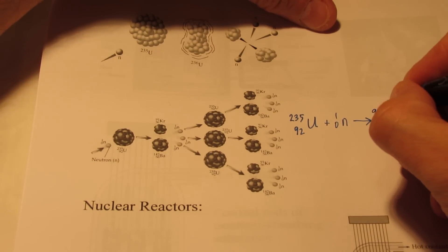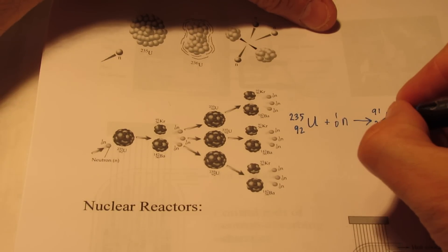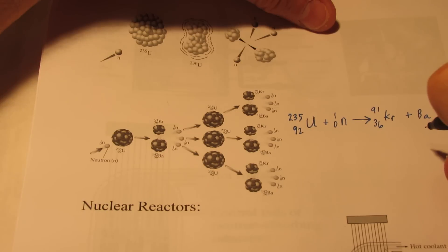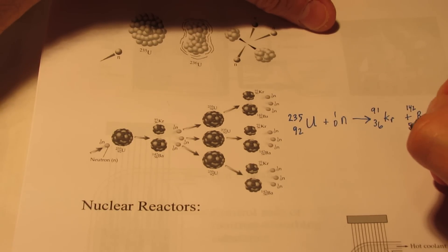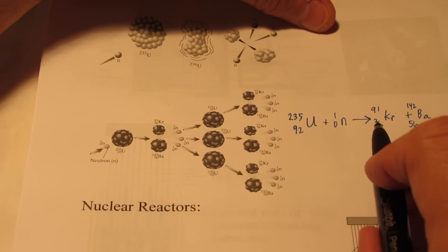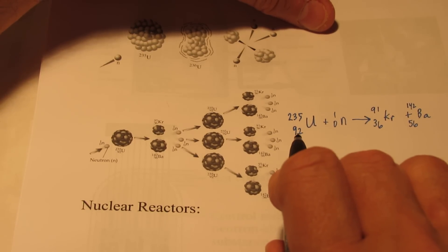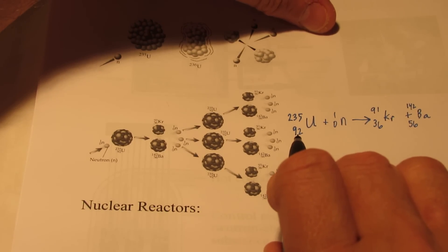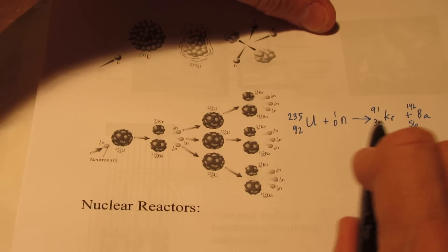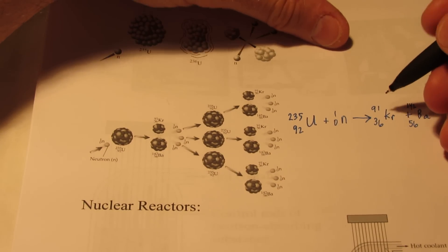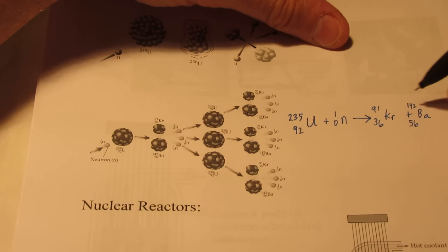Now the krypton isotope has a mass of 91 and krypton has 36 protons. The barium has a mass of 142 and it has 56 protons. So you can see on the bottom, 36 plus 56 gives me the atomic number of 92, which balances on both sides of this nuclear equation. However, the mass number, 91 plus 142, gives me a total of 233.